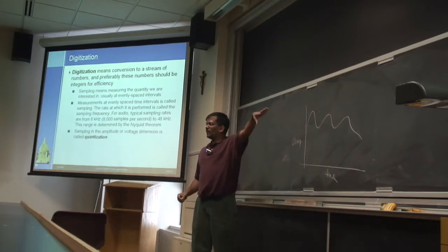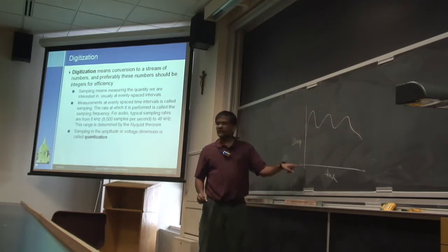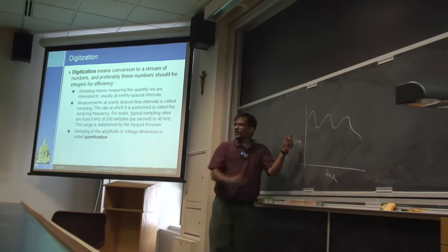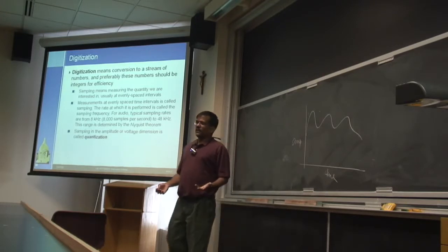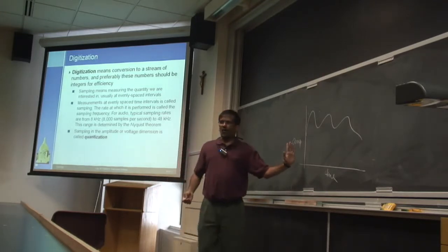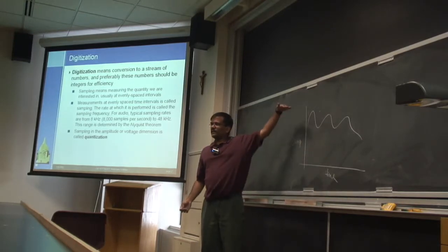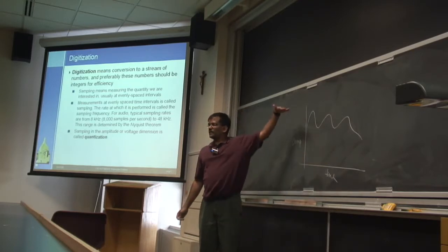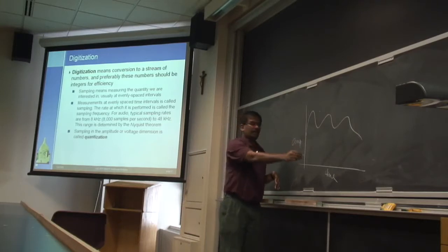The analog waveform says at time 0 the value was a certain thing, and at time t+1 the value was slightly higher — it's a continuous value. To convert it to digital, you have to decide how often you're going to sample on the x-axis and how many levels on the y-axis. The x-axis is called sampling and the y-axis is called the quantization level.